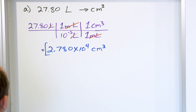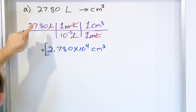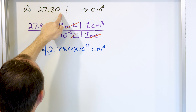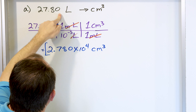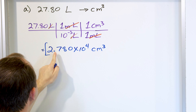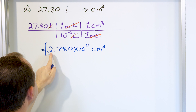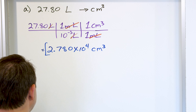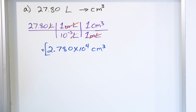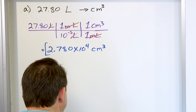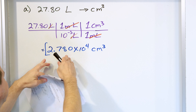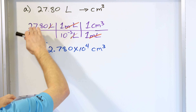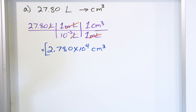We look at the significant figures. We had four significant digits in our original number, and now we have four significant digits in our answer. We want to have the same number of significant digits because this is just multiplication and division.